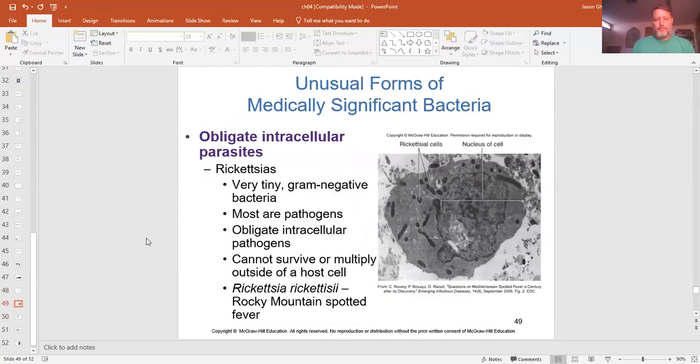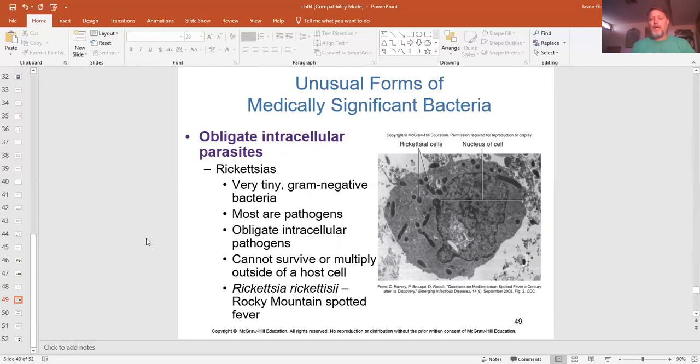Some unusual bacteria, medically speaking anyway, are these are obligate intracellular parasites. So these are bacteria that have to be inside of another cell to perform all their functions. These are very small bacteria. And since they have to be inside, they're pathogens. They cannot survive or multiply outside of their host. The main one right here is the Rickettsia rickettsii. It's transmitted from ticks, and it's Rocky Mountain spotted fever. You can see the rickettsii, these little dots inside of the cell. And this is an infected eukaryotic cell because there's the nucleus in it. So these are very tiny bacteria.